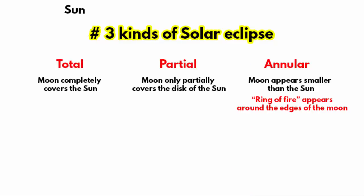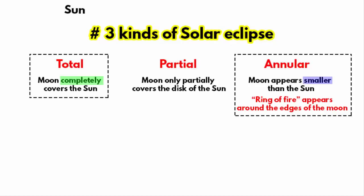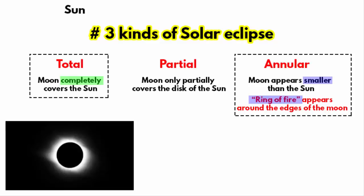Now, if we were to look at the difference between a total solar eclipse and an annular solar eclipse, the only difference is that in a total solar eclipse, the moon perfectly blocks the entire sun.